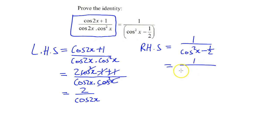I'm going to say 1 over, my LCD will be 2, so it will be 2 cos squared x minus 1, which would leave me with 1 times 2 over 2 cos squared x minus 1.